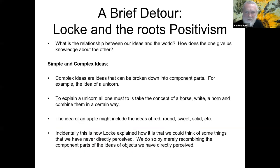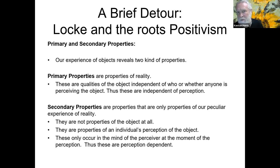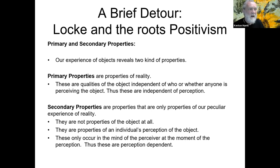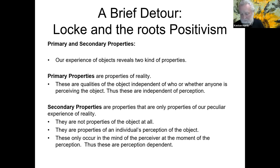We talked about simple and complex ideas, and primary and secondary properties, in the previous lecture. For Locke, secondary properties are properties that occur in our minds but are not actual properties of the world. Key to Locke's understanding is that we can go from mental representations to knowledge about the world, but we have to be careful not to ascribe secondary properties to the world itself. Secondary properties are merely properties of our perception; the primary properties are the real stuff. For an apple, red and sweet are secondary, while round and solid are primary.